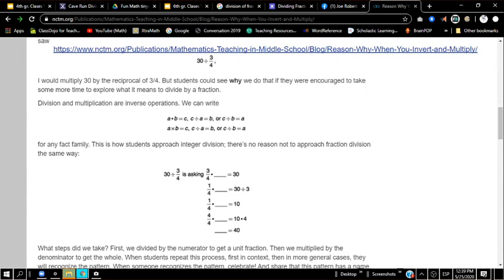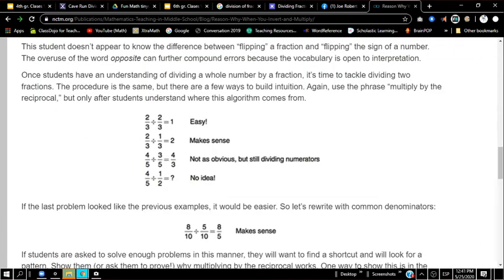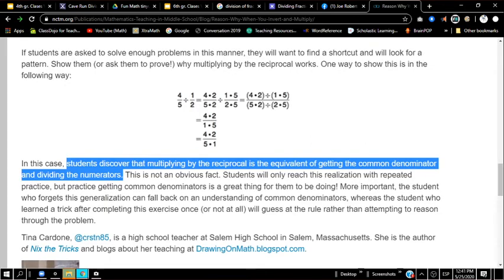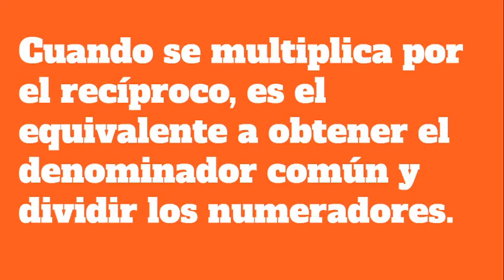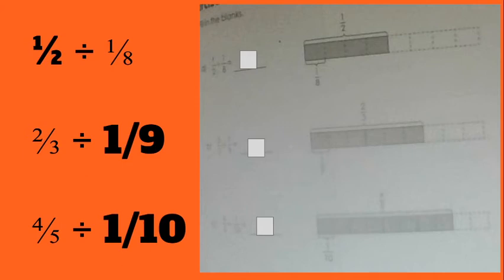You might be asking: why do we switch the second fraction? Here's an explanation from NCTM.org — the National Council for Teaching Mathematics. They give a long explanation of what's easy and what's more difficult, and at the very end they give this one sentence: 'Students discover that multiplying by the reciprocal is the equivalent of getting the common denominator and dividing the numerators.' That's the reason why we multiply by the reciprocal.